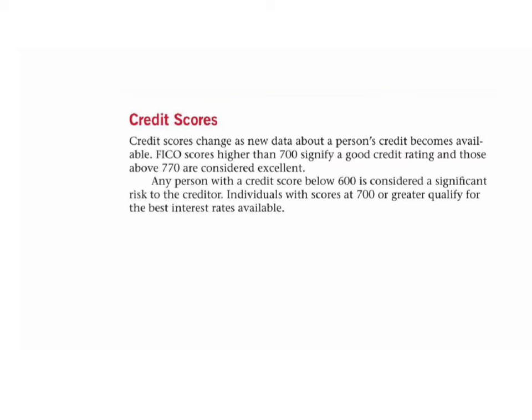Here is a blurb on credit that is necessary for us prior to Example 4. Credit scores change as new data about a person's credit become available. FICO scores higher than 700 signify a good credit rating, and those above 770 are considered excellent. Any person with a credit score below 600 is considered a significant risk to a creditor, and individuals with scores at 700 or greater qualify for the best interest rates available.